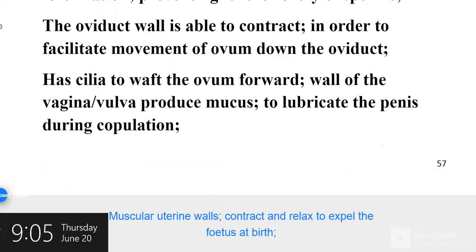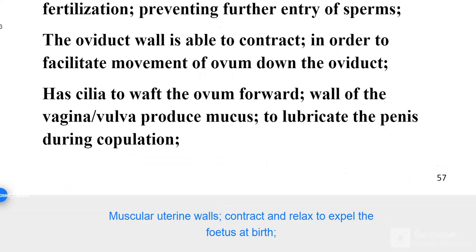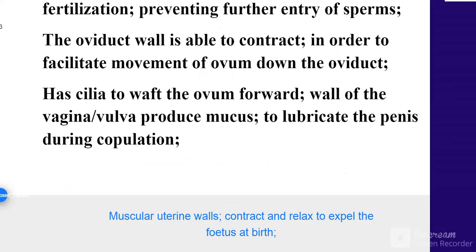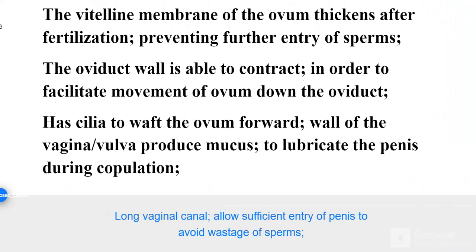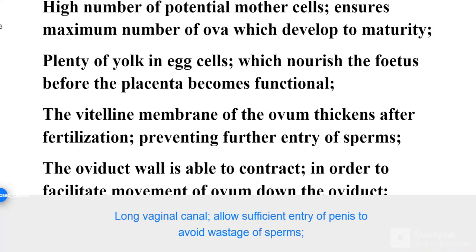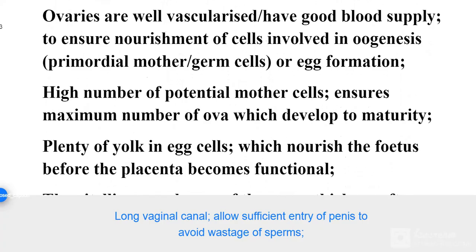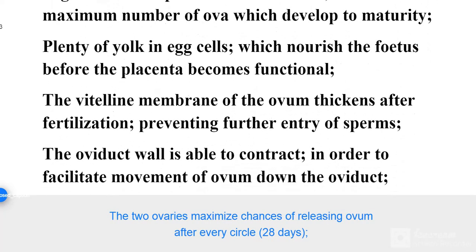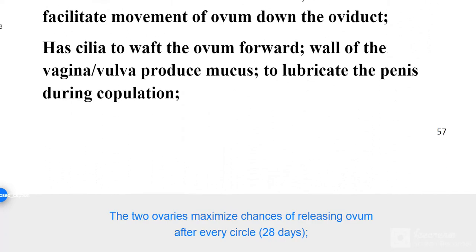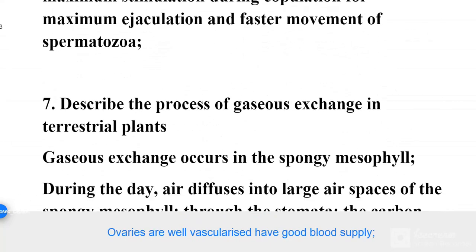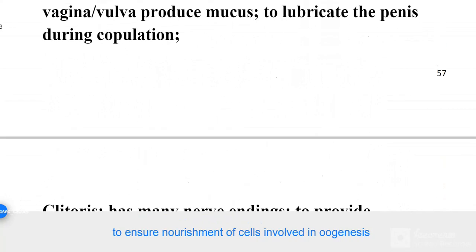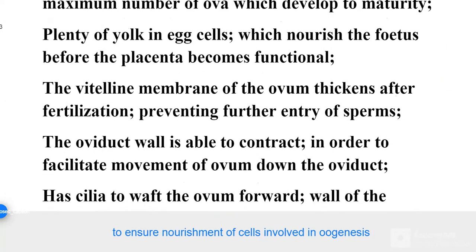Muscular uterine walls contract and relax to expel the fetus at birth. The long vaginal canal allows sufficient entry of the penis to avoid wastage of sperms. The two ovaries maximize chances of releasing an ovum after every cycle of 28 days. The ovaries are well vascularized, with a good blood supply.